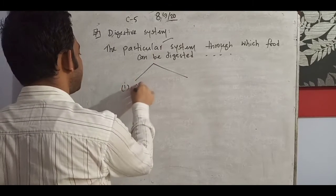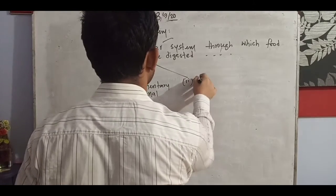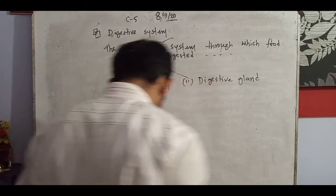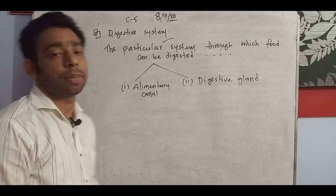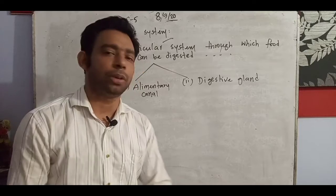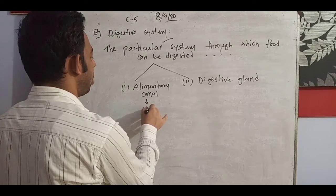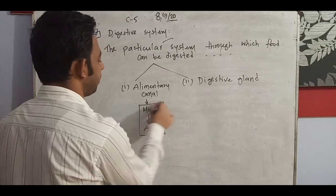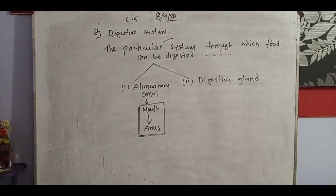There are mainly two parts of the digestive system. One is the alimentary canal and another one is the digestive gland. Digestion is done by these two important things: the alimentary canal and the digestive gland, from which gastric juice, pancreatic juice, and different kinds of enzymes can be secreted. The alimentary canal runs from the mouth to the anus.